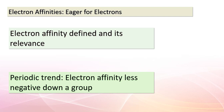Our journey through elemental properties continues with a look at electron affinities. Electron affinity measures an atom's eagerness to gain an additional electron — vital in understanding how atoms form ions and engage in chemical reactions. As we descend down a group, electron affinity becomes less negative, meaning atoms are less likely to gain an extra electron. As we move across a period, electron affinity generally becomes more negative, indicating a greater readiness to accept an electron. These trends are linked to factors like atomic size and electron configuration.